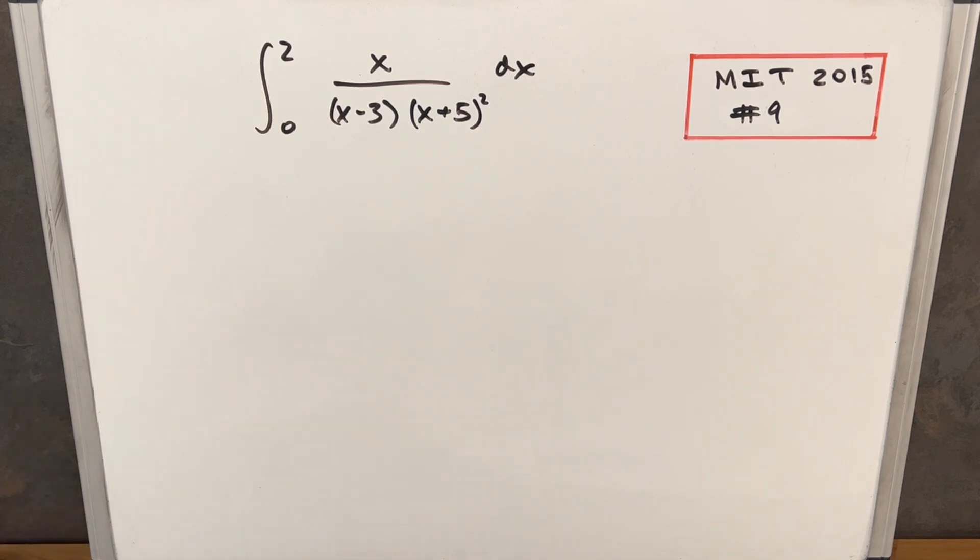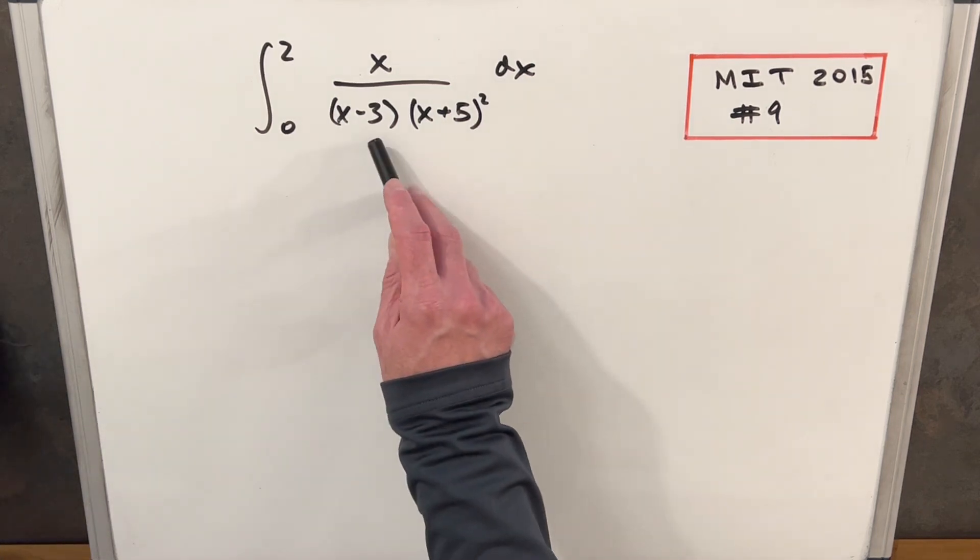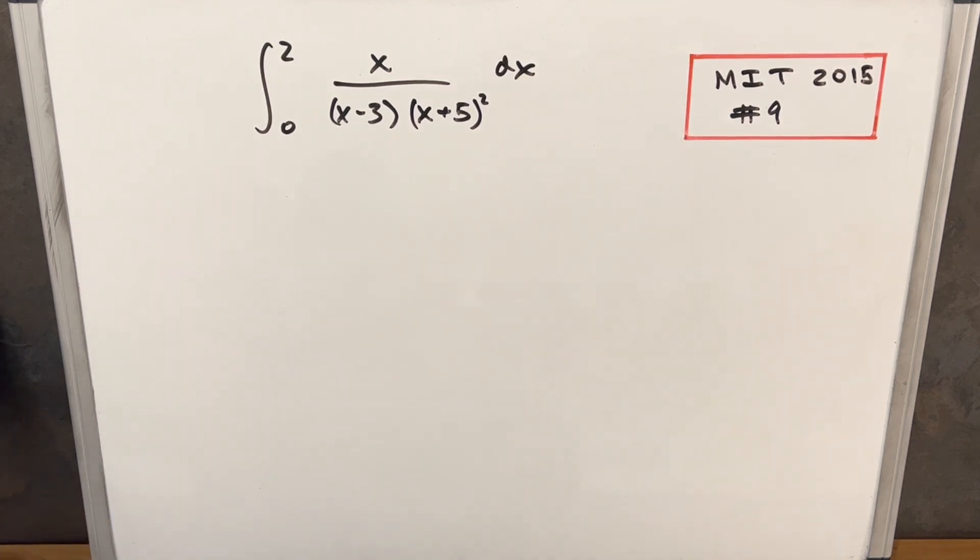We have the integral from zero to two of x over (x minus three) times (x plus five) squared dx. This really stands out as the case where we need to use partial fractions, just because we have our denominator that looks like it needs to be broken up.